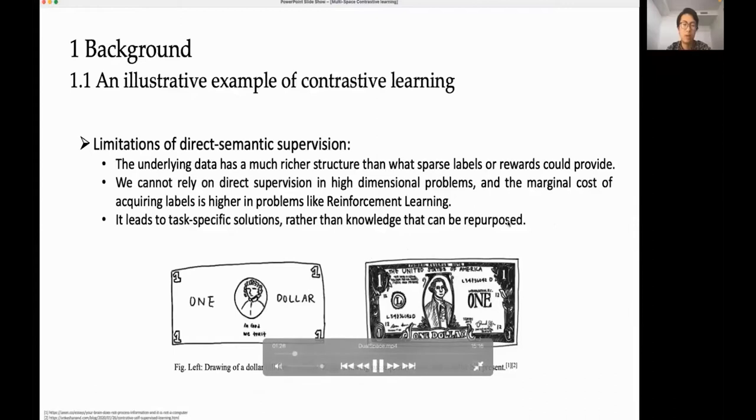In fact, we really only retain enough features of the bill to distinguish it from other objects. Similarly, can we build a representation learning algorithm that doesn't concentrate on pixel-level details and only encodes high-level features sufficient to distinguish different objects? The answer is yes, and this is the core idea of contrastive learning.